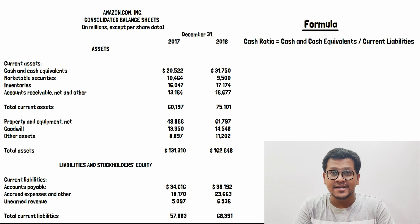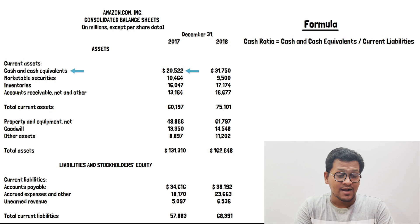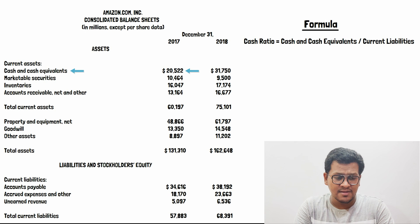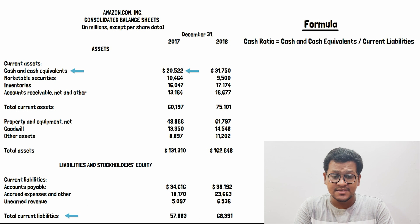We will move to the current assets section where we have cash and cash equivalents amounting to 20,522. Next we will move to the current liabilities section where we have accounts payable, accrued expenses, and unearned revenue.